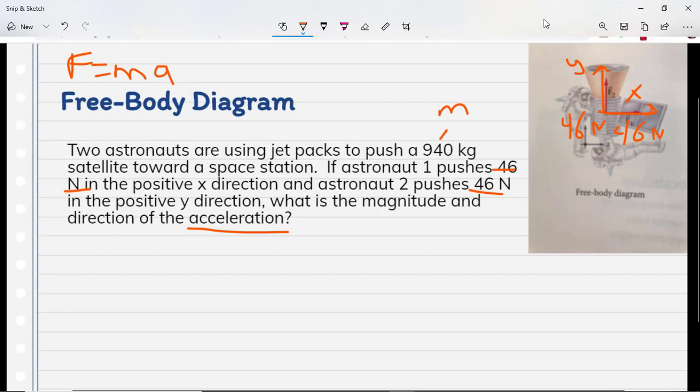And then as a result of that, we can then use a little bit of Pythagorean theorem in order to figure out the direction or the magnitude and direction of the acceleration. So in order to do that, we need to put in f equals ma. So we need to do it for both directions. So force of x equals mass times the acceleration in the x direction. And the force in the y direction equals the mass times the acceleration in the y direction.